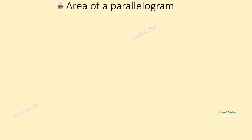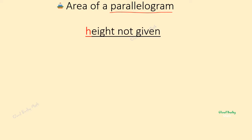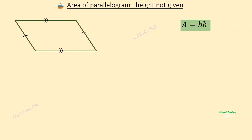Hello guys and welcome. In this video we're going to look at how to determine the area of a parallelogram when we are not given the perpendicular height. We know that the area of a parallelogram is given by the length of the base times its perpendicular height. Let's consider this parallelogram with a base of 13 centimeters and a side of 5 centimeters.